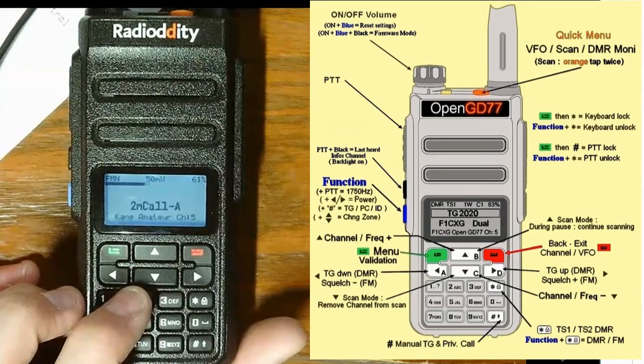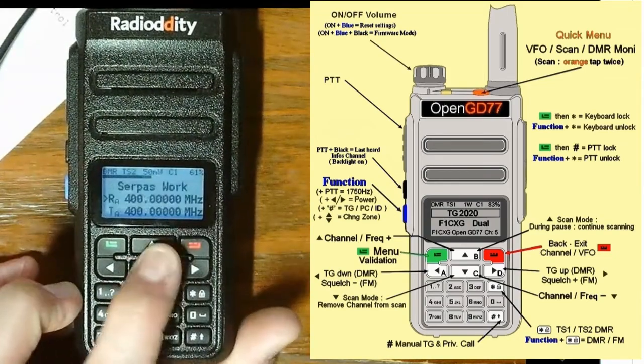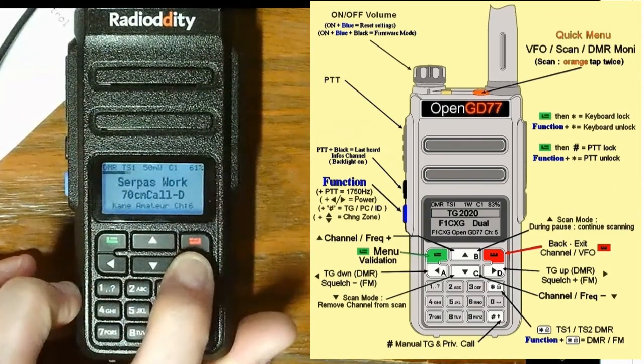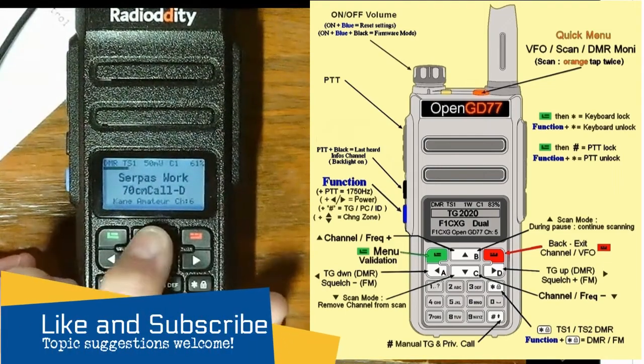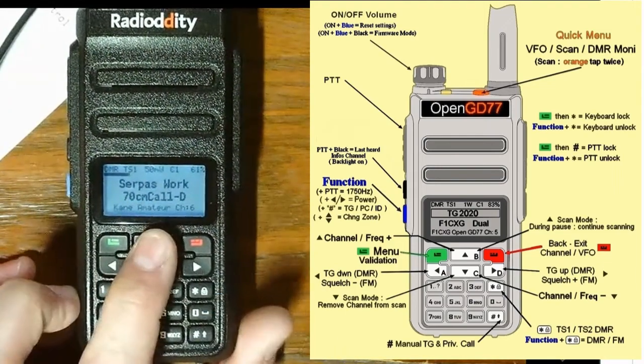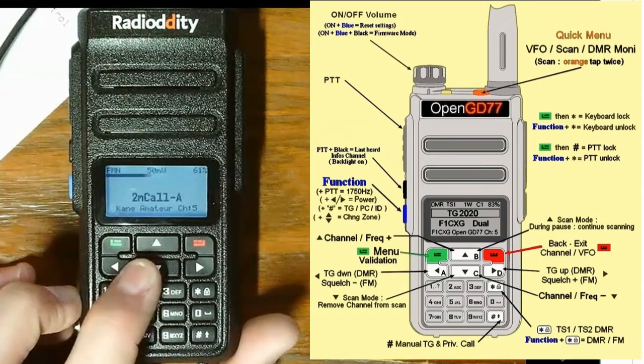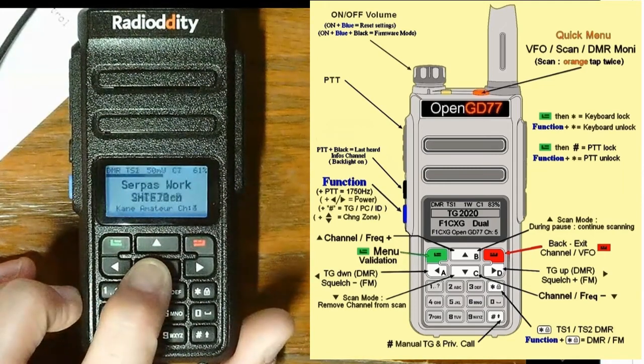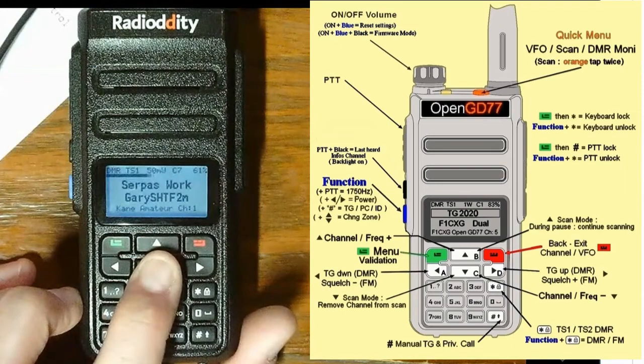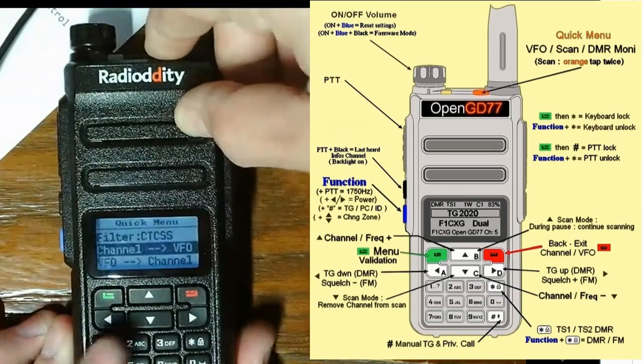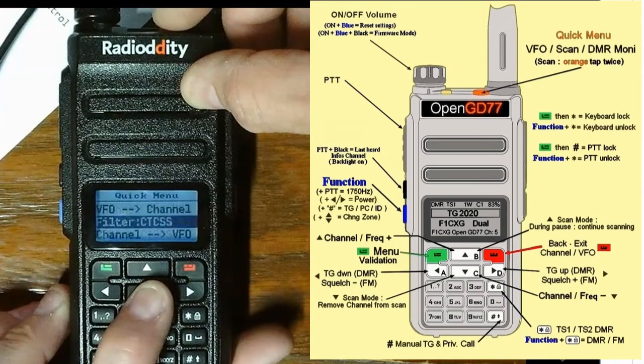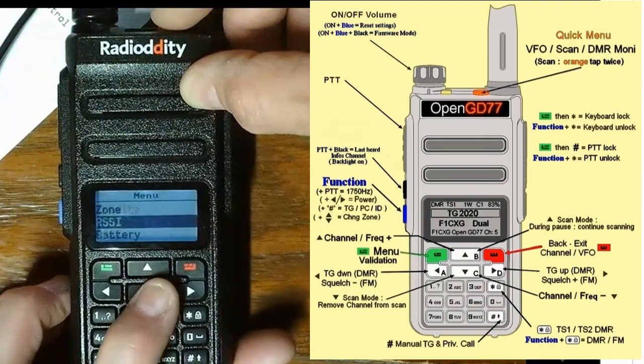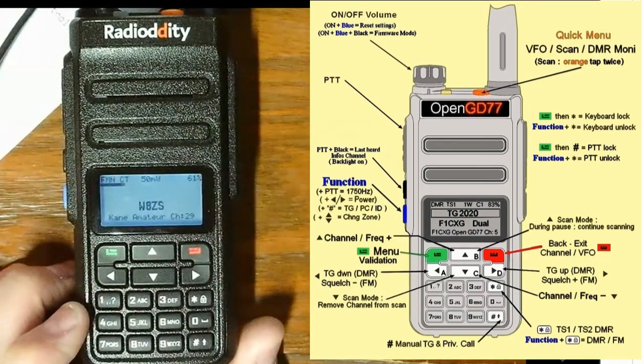If we move down, this changes our... Oops. I went to VFO mode. If I get into digital and I want to change my talk group... If I had more talk groups programmed in... And apparently, I don't for this channel. I believe it would change the talk groups. I apologize for that. There's a scan mode. Remove channel from scan. I'm not totally sure. I do know if I press this top button, I can change a bunch of settings as well. I guess I'll get back to that in a minute. There is, moving around,